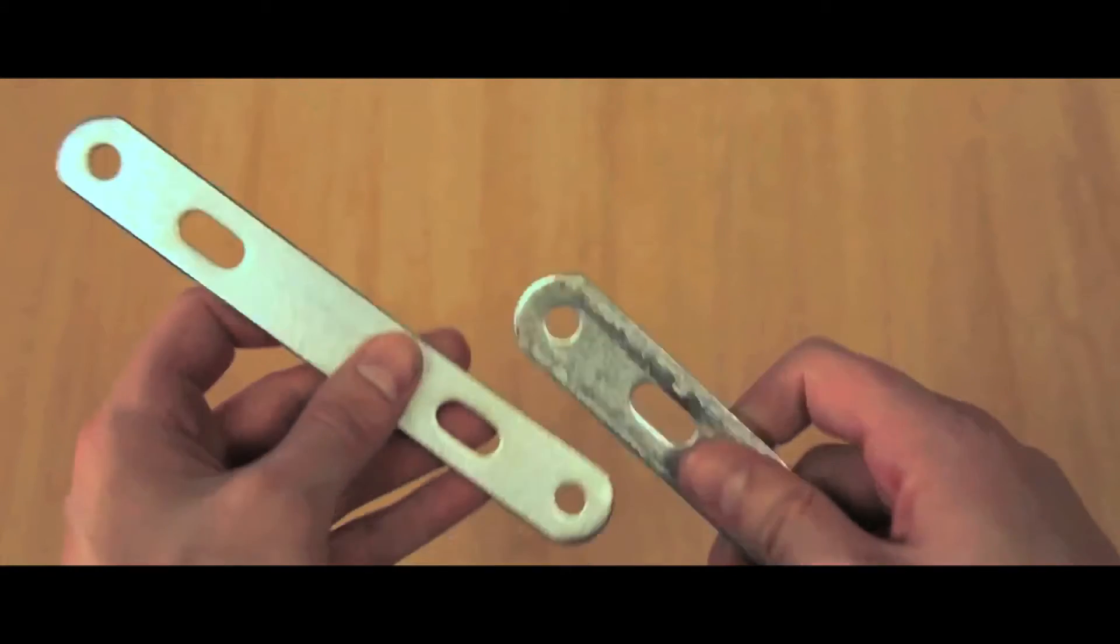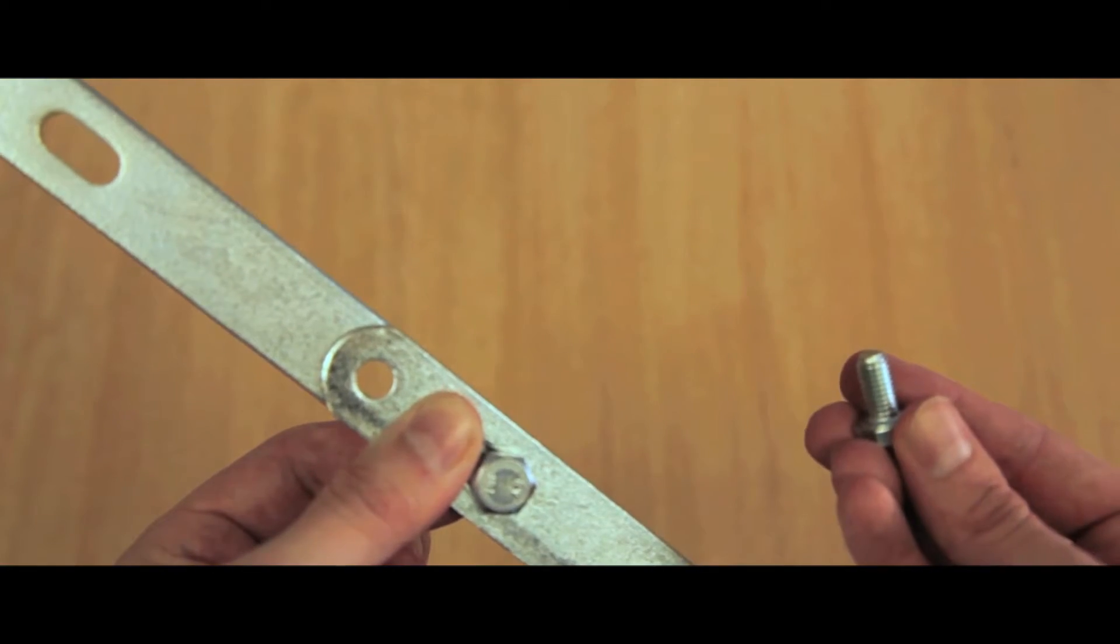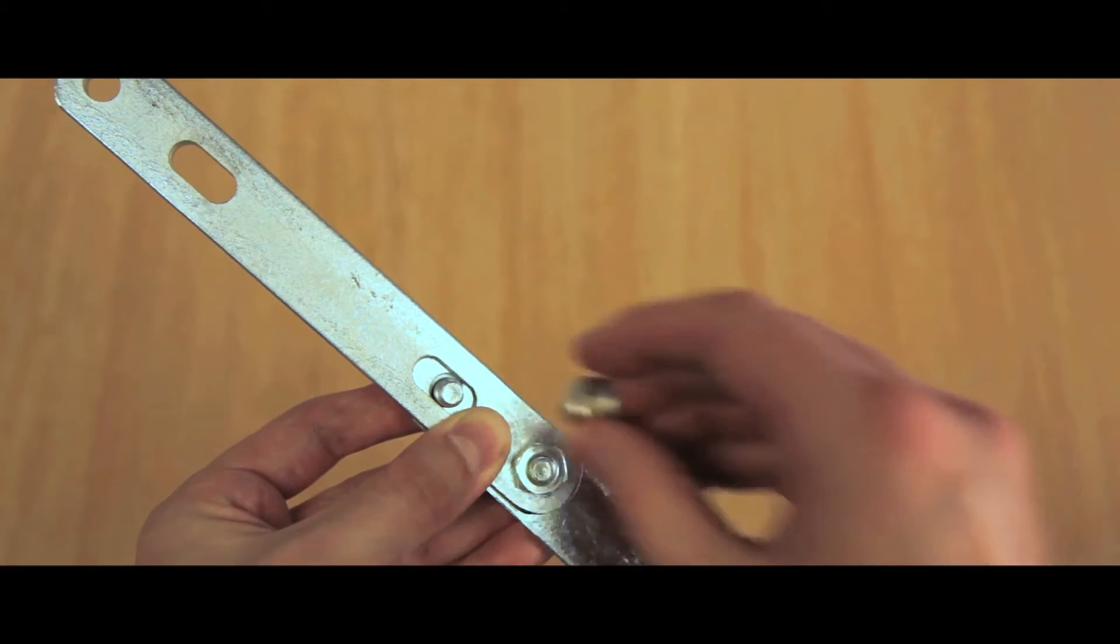Attach the straight bracket to the flat bracket using two M8 bolts. Tighten using two M8 nuts.